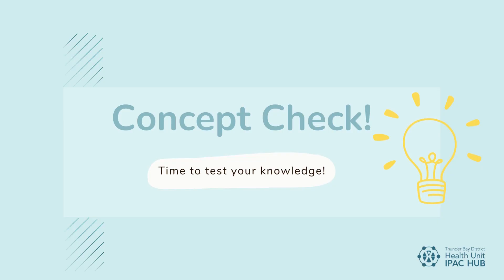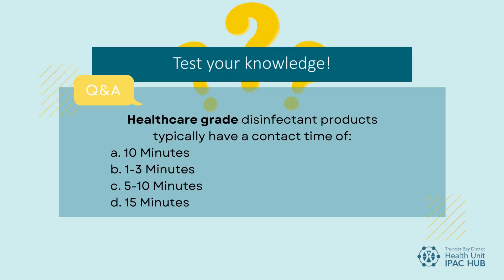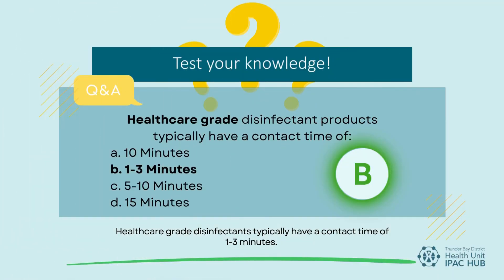For our final concept check: healthcare-grade disinfectant products typically have a contact time of A) 10 minutes, B) 1 to 3 minutes, C) 5 to 10 minutes, or D) 15 minutes. The answer is B — disinfectants chosen for healthcare settings should have a short contact time of 1 to 3 minutes to ensure fast and effective environmental cleaning. The shorter the contact time, the more rapid the disinfecting process, the less time required for the surface to remain wet, and therefore the quicker it can go back to being used once dried. When disinfectants are applied to any surface, it's important for the surface to stay wet long enough to ensure the contact time is met, to ensure any viruses or bacteria are thoroughly killed.